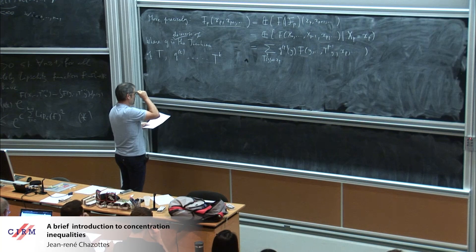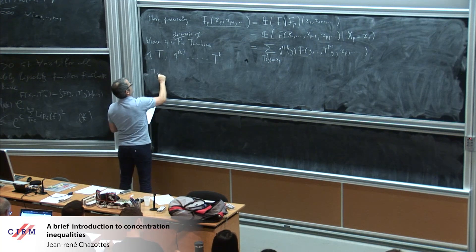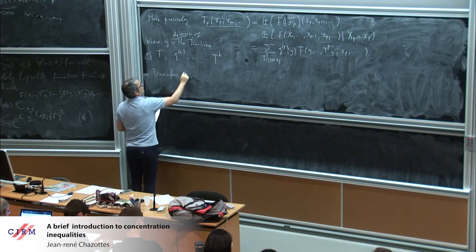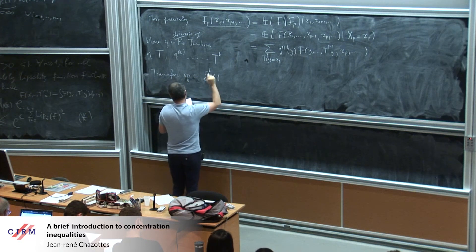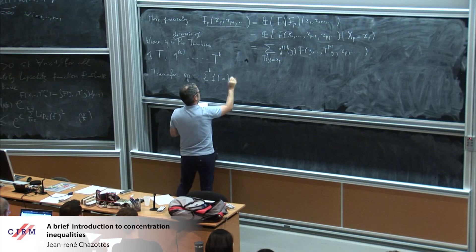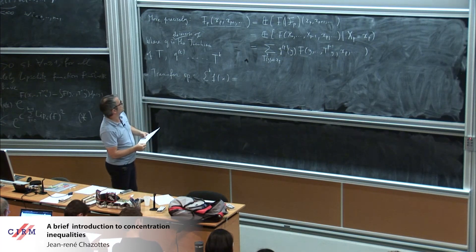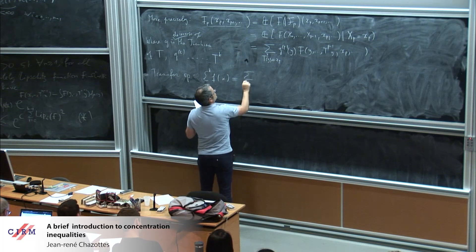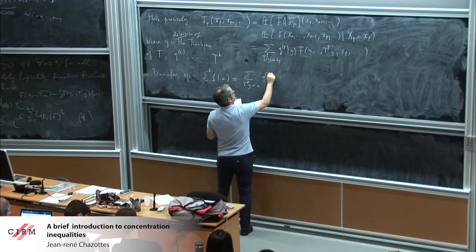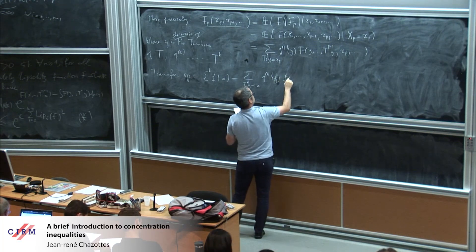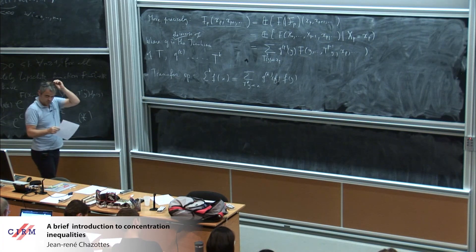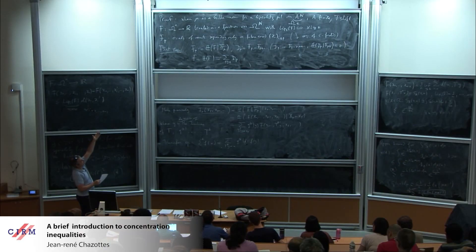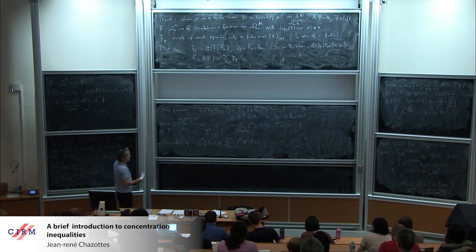I can now define the transfer operator associated to my potential: (Kf)(x) = sum_{T(y)=x} g_k(y) · f(y). In this nice context you have the spectral gap, of course. This is the first step.